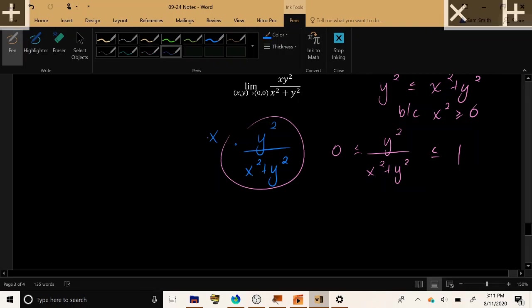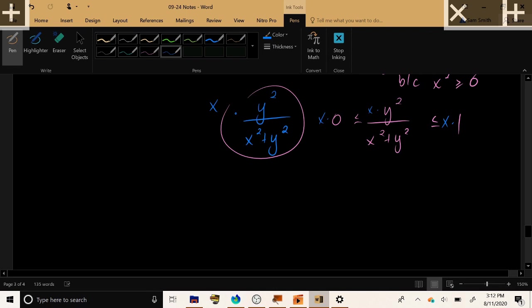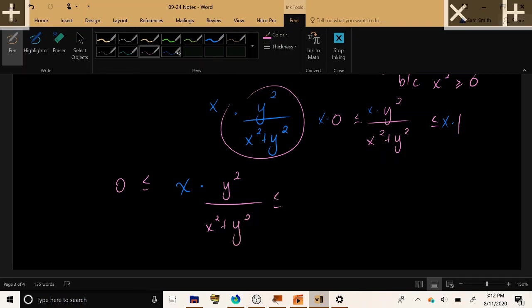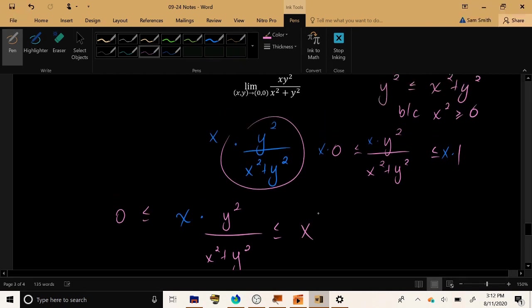Now, what happens if we multiply by x? If we multiply by x, the result is still going to be squeezed between 0 and now x times 1, times x. Now, looking at our original limit, no matter what path we take, x is going to get closer and closer to 0. So this approaches 0.